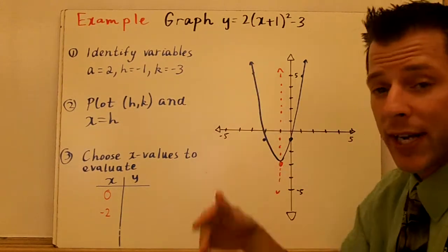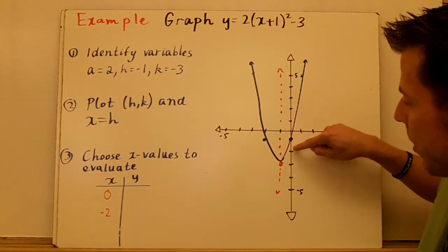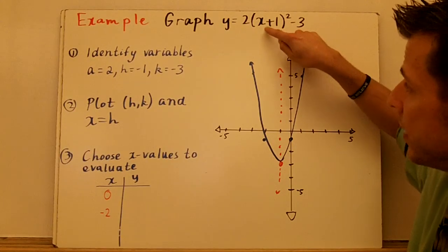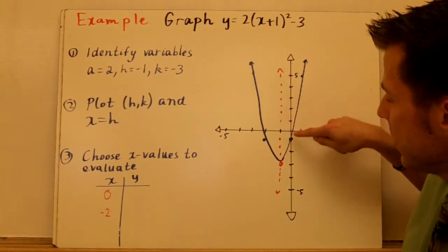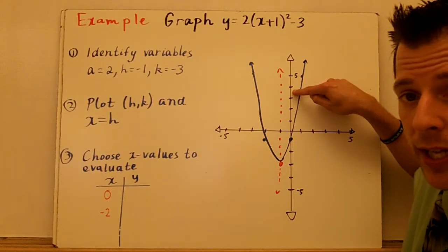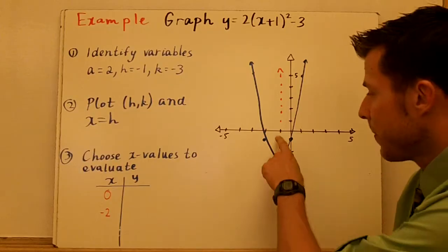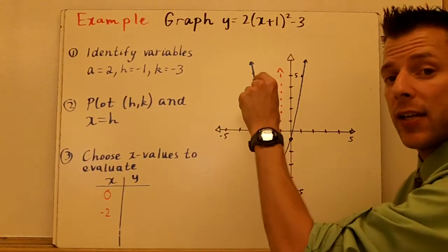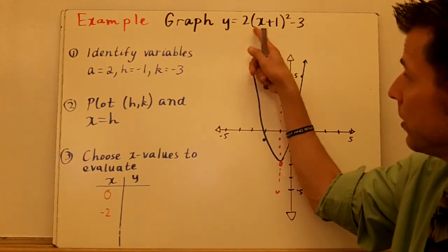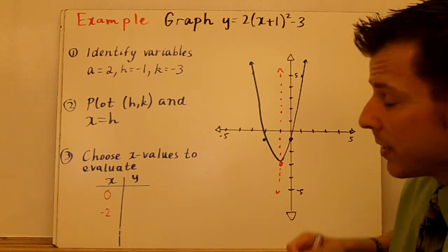Now, I don't have a fraction here, so I'm actually going to pick 1 to the right and 1 to the left. So watch. If I plug 0 in, 0 plus 1 is 1, 1 squared is 1, times 2 is 2, minus 3 is negative 1. So look, I pick a point 1 to the right of the axis of symmetry and I got 1. Let's pick 1 to the left. Negative 2. Negative 2 plus 1 is negative 1. Negative 1 squared is 1, times 2 minus 3. And notice, the same output. The same output.